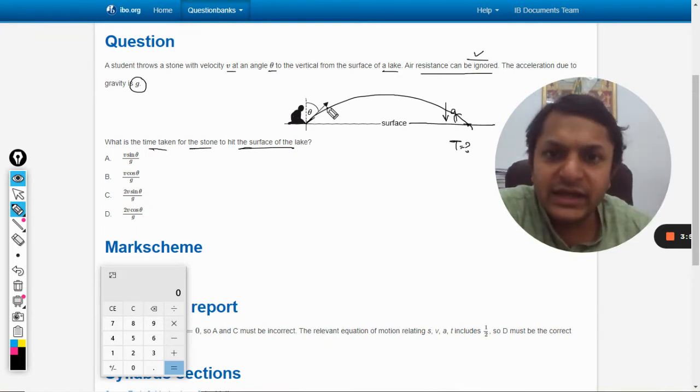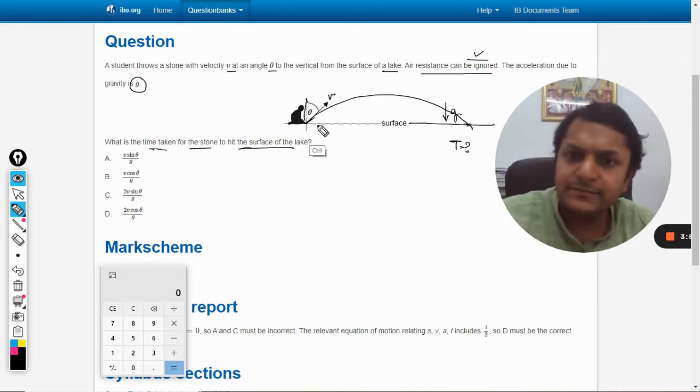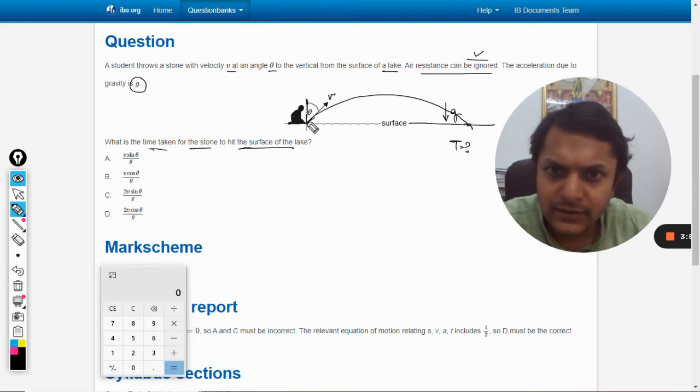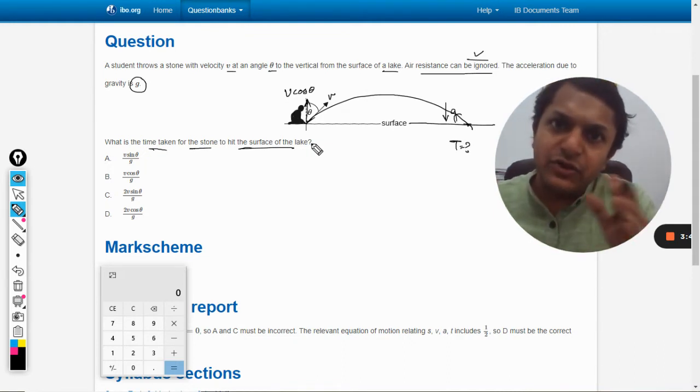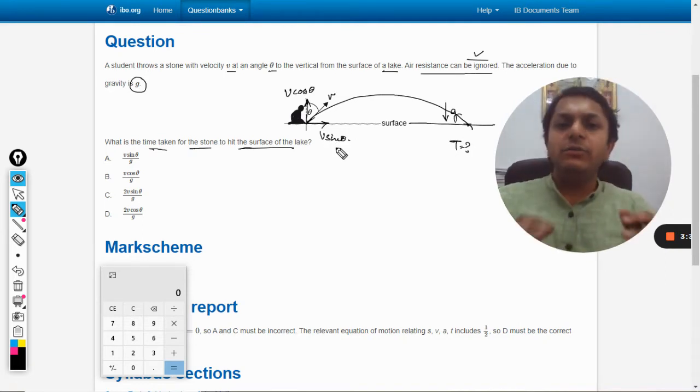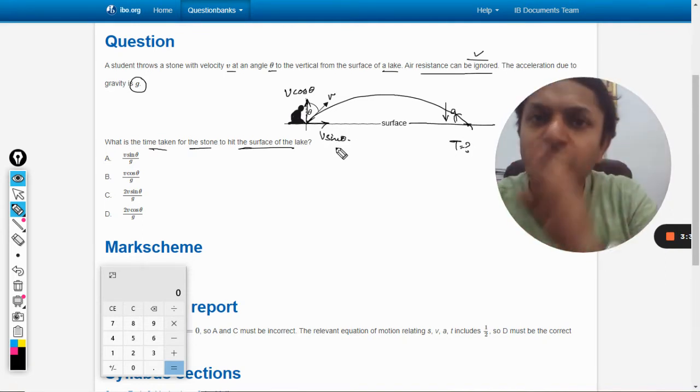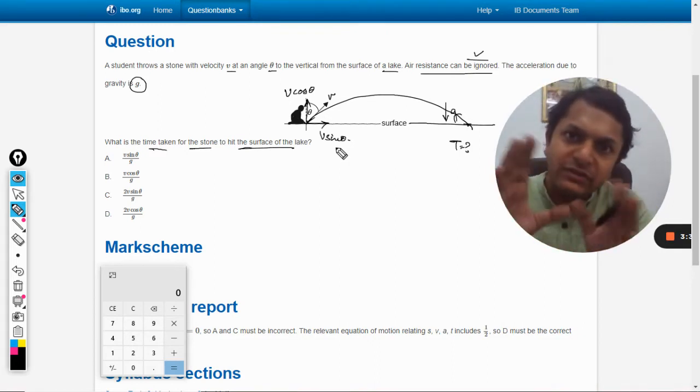This is v, and the component of the velocity—because velocity is a vector—we have to divide it into two components. This is v cos theta and this is v sin theta, because theta is with the vertical, not with the horizontal now.